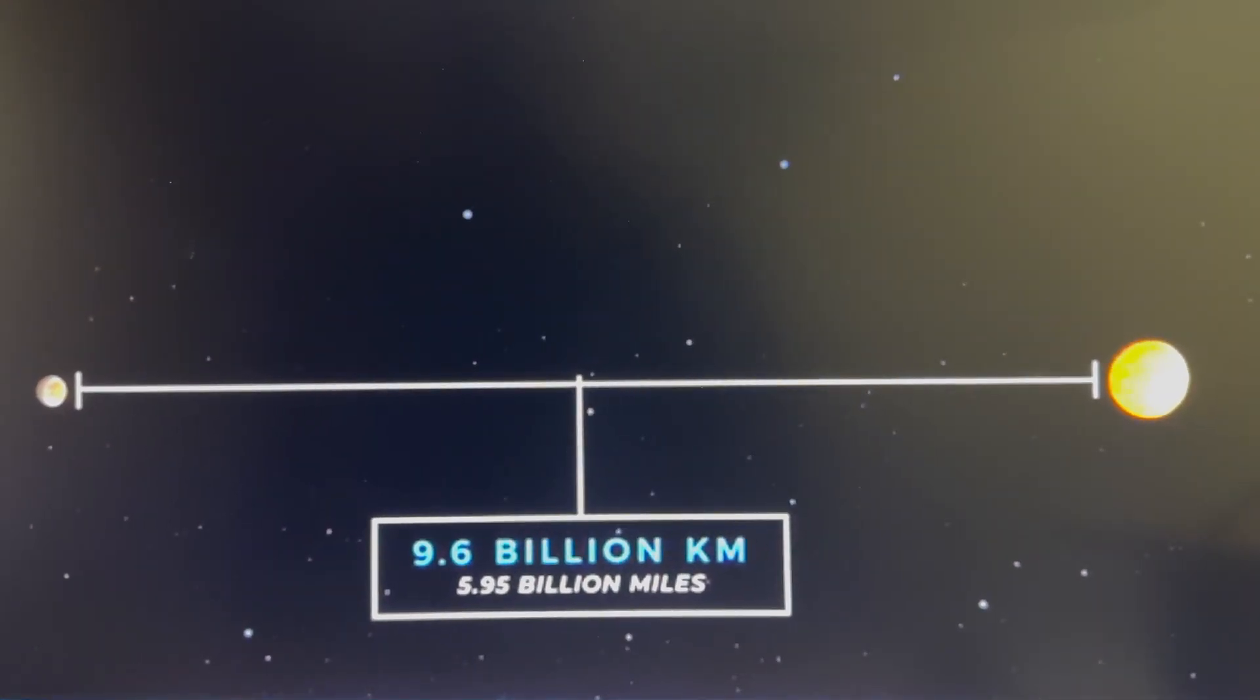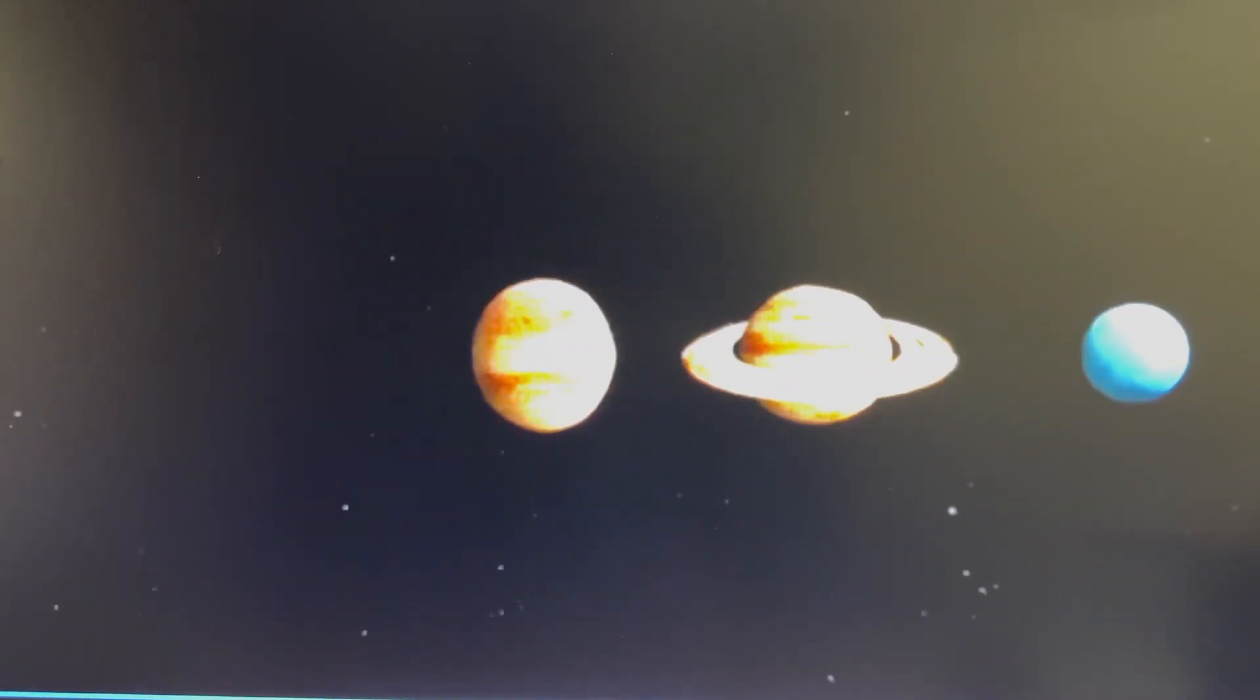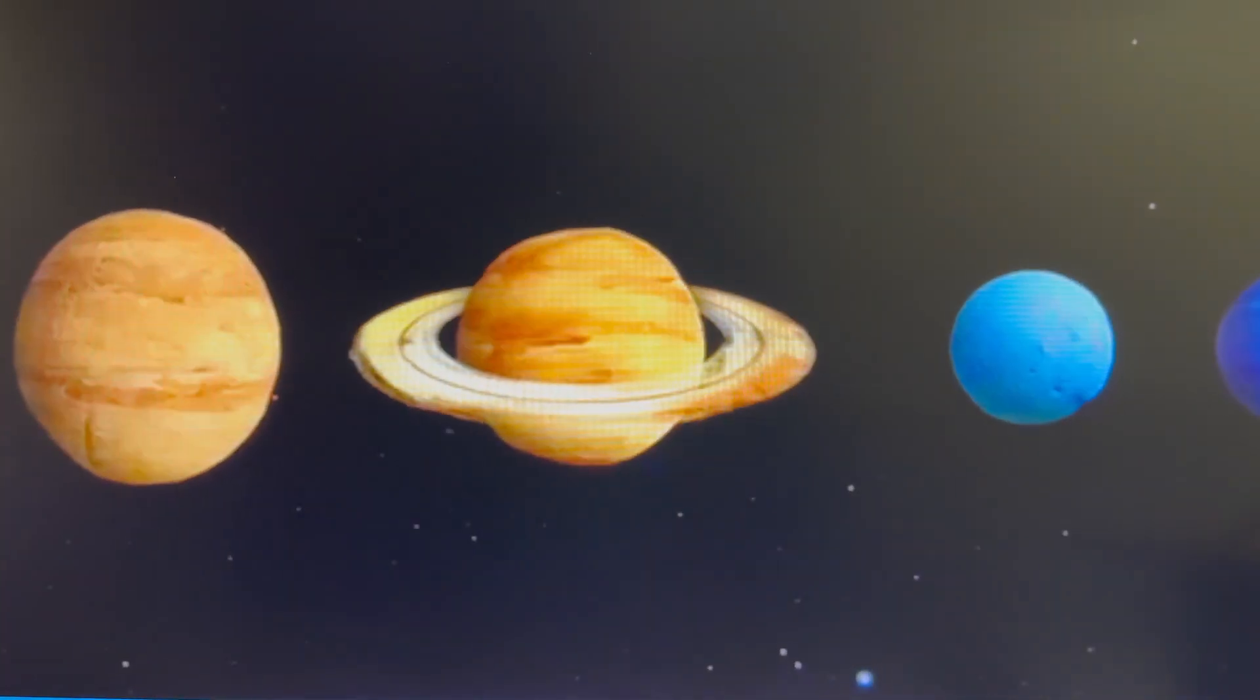Because of this extreme distance, the gravity of the known planets in the outer solar system are unlikely the cause of the Goblin's unusual behavior. So there has to be something else perturbing these distant celestial bodies, right?